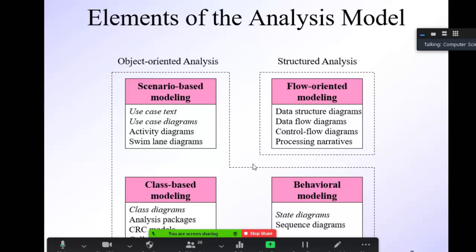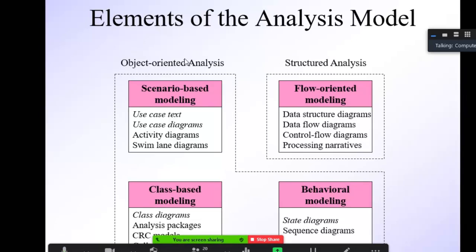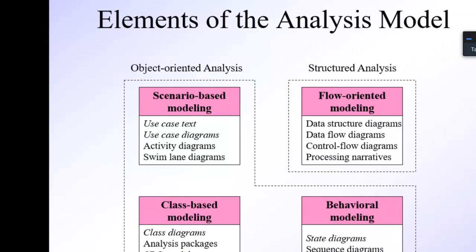These four models are the elements of the analysis model. Basically there are two types of analysis model. First is object-oriented analysis, related to classes and objects. Second is structured analysis, which is the static structure of your project — UML diagrams that are not going to change during execution. In object-oriented analysis, there are three types of UML diagrams: scenario-based modeling, class-based modeling, and behavioral modeling.